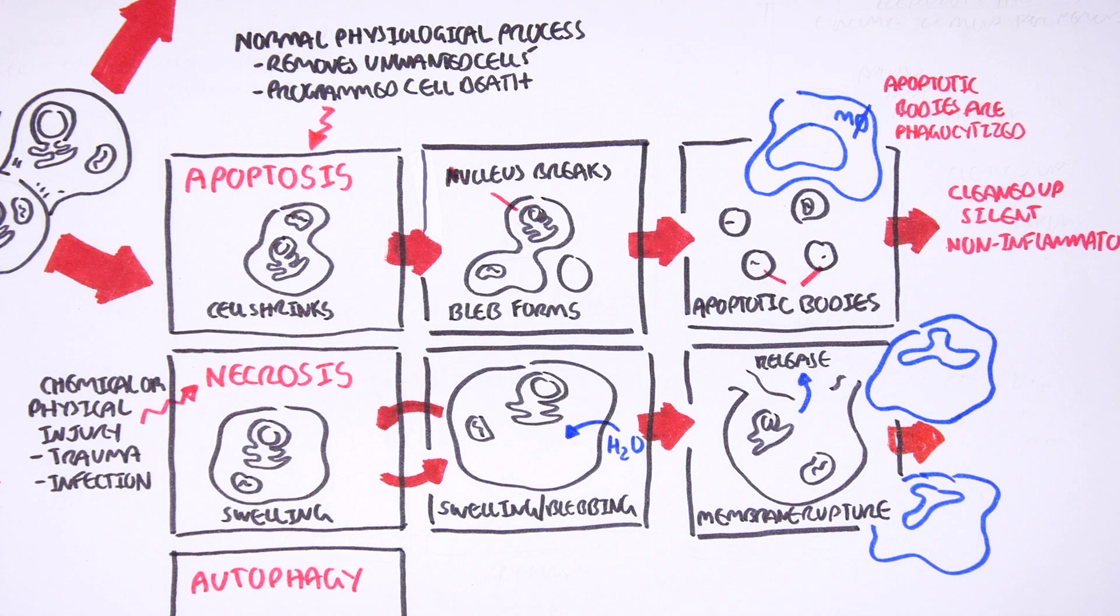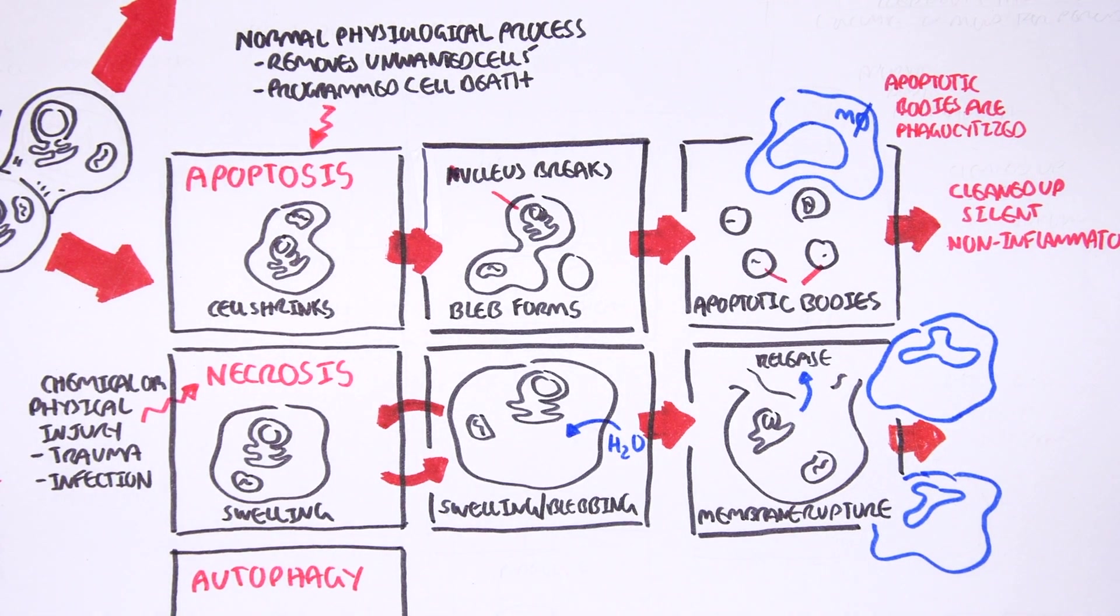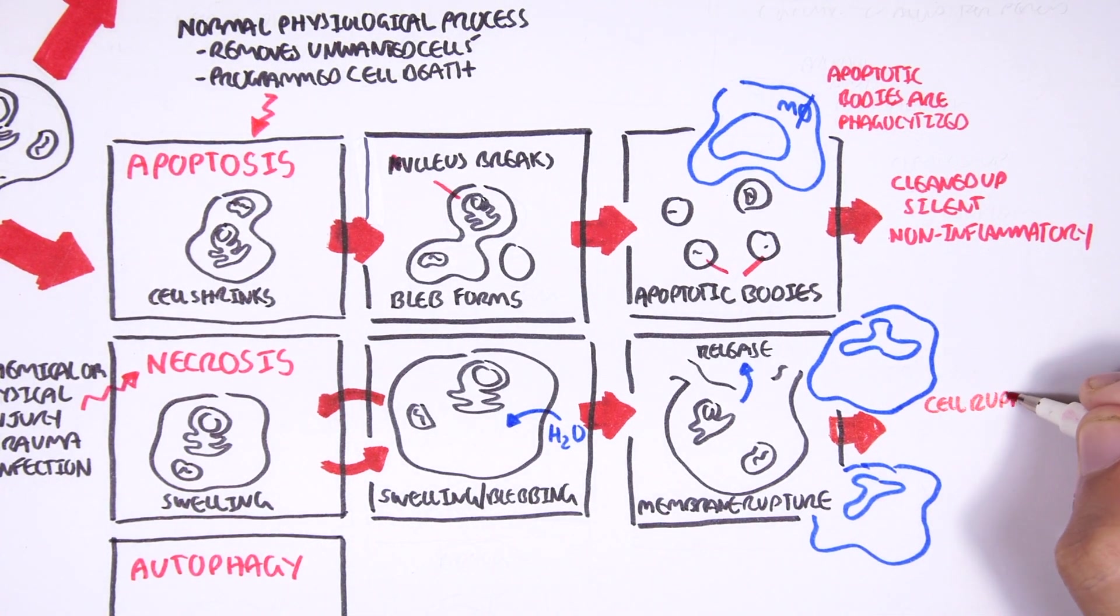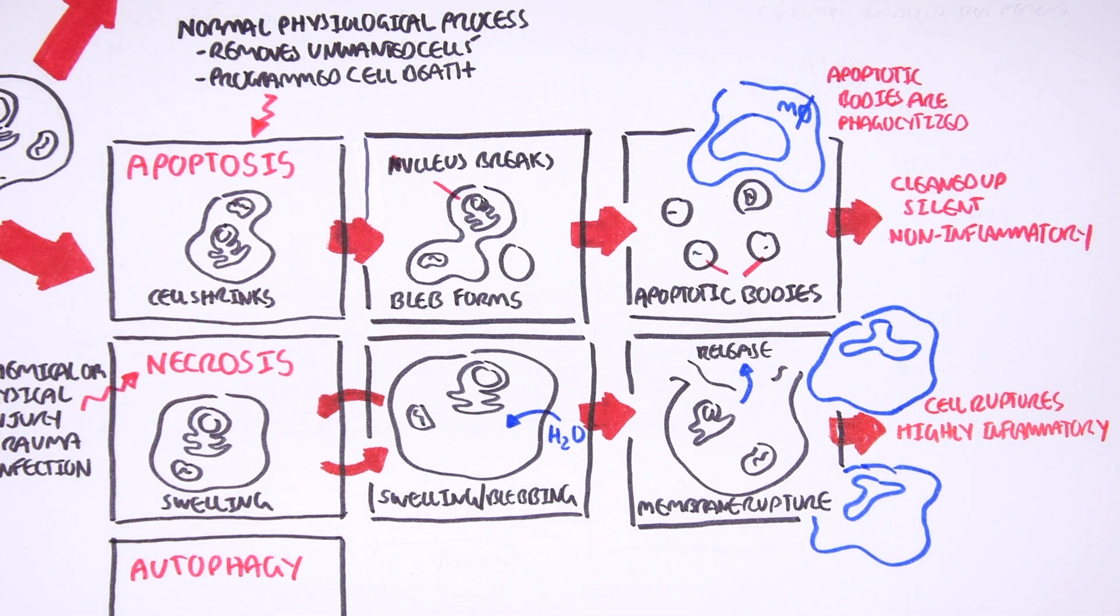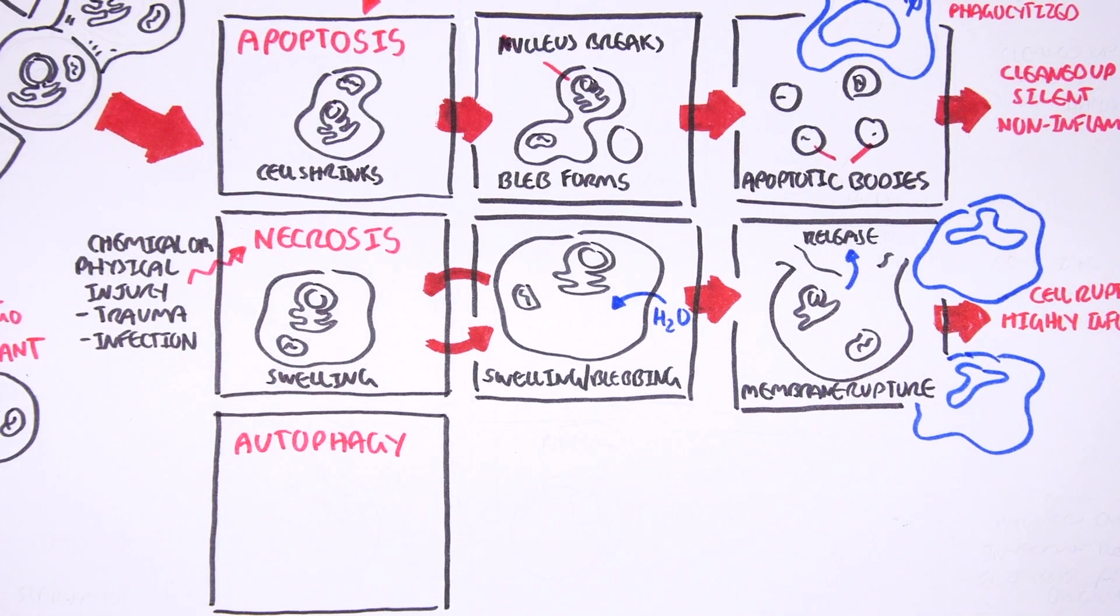This will create a response that will attract neutrophils, which are highly inflammatory cells, to clean up the mess and cause further inflammation. Therefore we can say that necrosis, unlike apoptosis, causes the whole cell to rupture and therefore it is highly inflammatory.